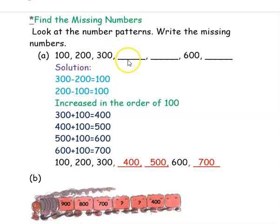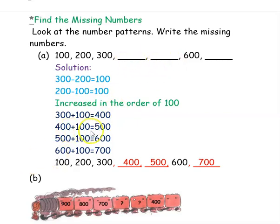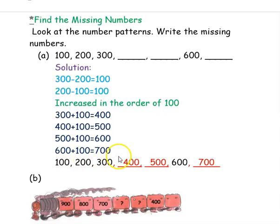So from 300, if you go to the next number, you have to add 100. So 300 plus 100 is 400. Then if you go to the next number, you add 100 again — so 400 plus 100 is 500. They have already given 600, and 500 plus 100 is 600. Then for the next blank you add 100 to 600 — so 600 plus 100 is 700. So the missing numbers are 400, 500, and 700.